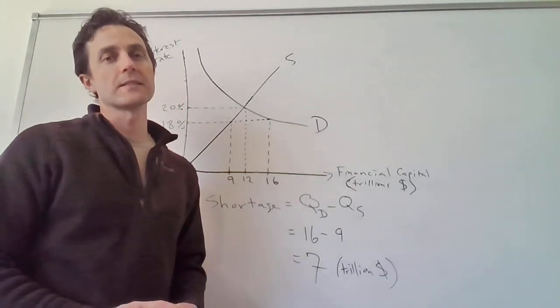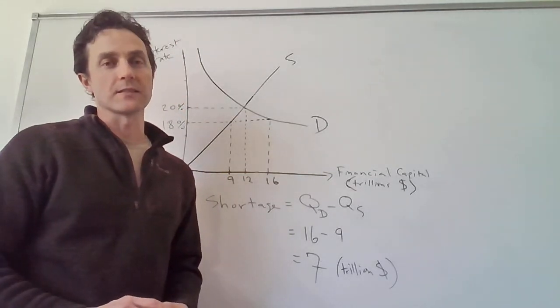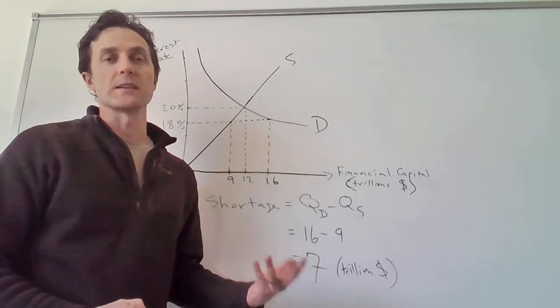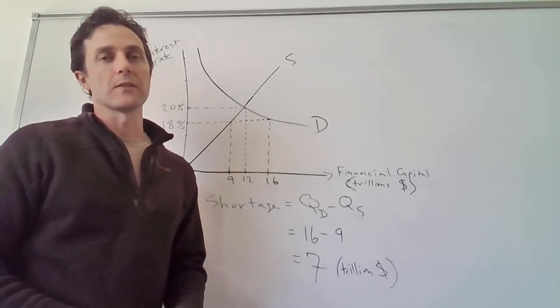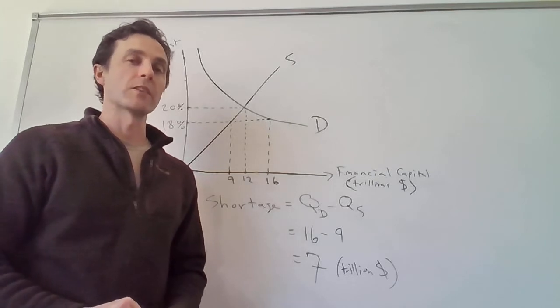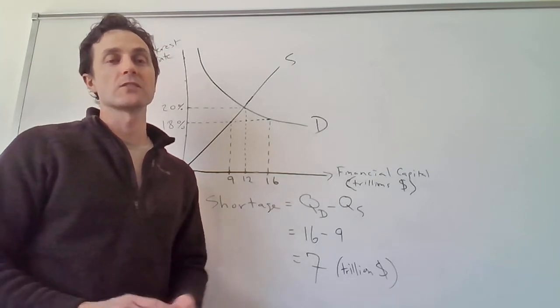This is essentially a price ceiling. The price happens to be an interest rate, and if there's a usury law saying you can't have an interest rate greater than 18%, that's essentially a price ceiling.